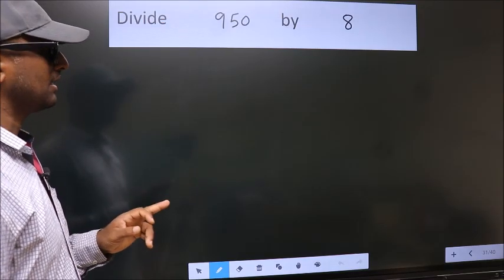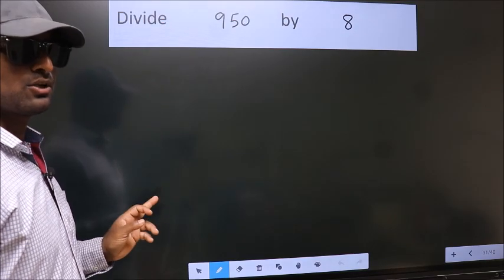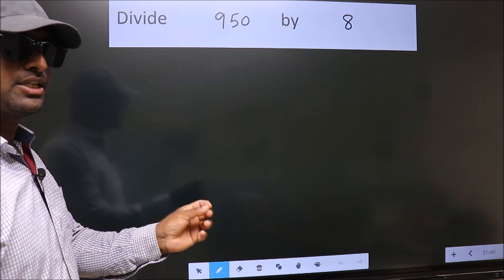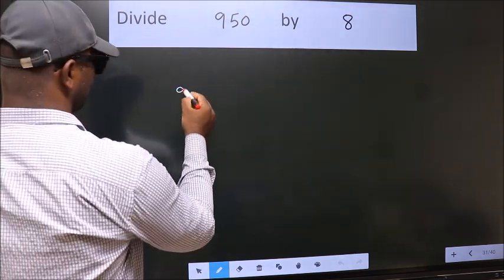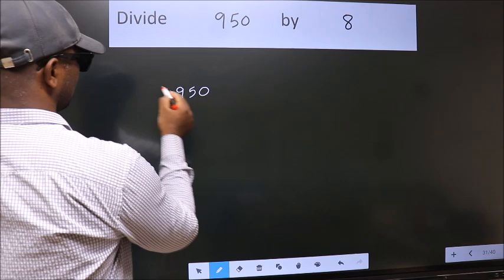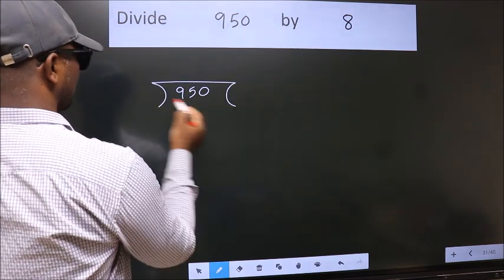Divide 950 by 8. To do this division, we should frame it in this way. 950 here, 8 here.